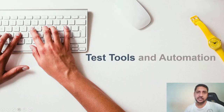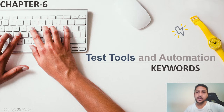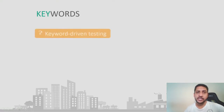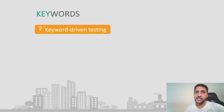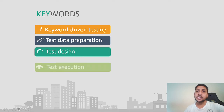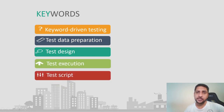Hello and welcome to chapter number 6, that is Test Tools and Automation. At the end of this lecture you must know these keywords: Keyword Driven Testing, Test Data Preparation, Test Design, Test Execution, and Test Scripts. These are the 5 keywords which you should know by the end of this lecture.